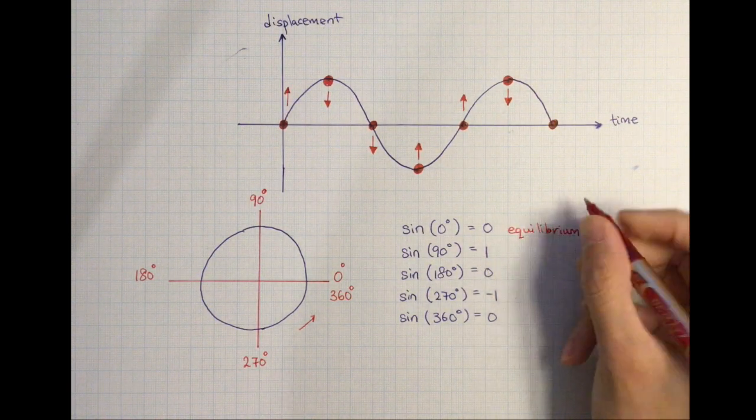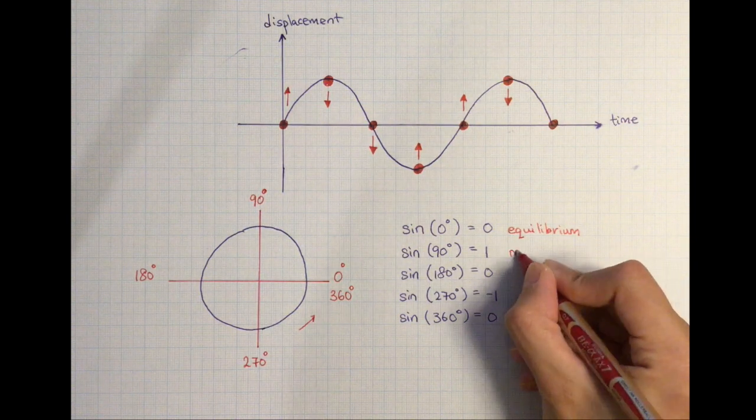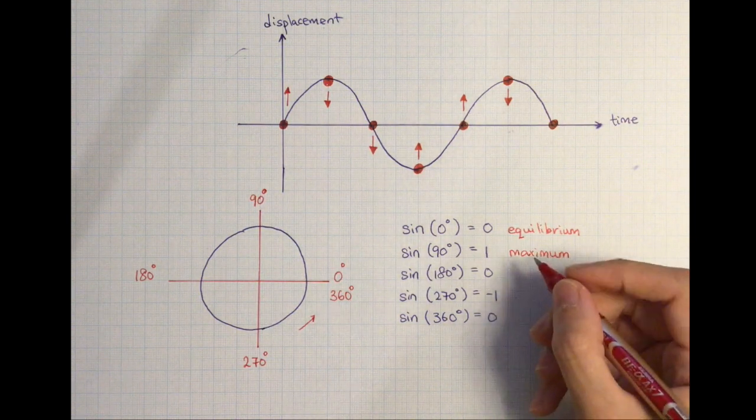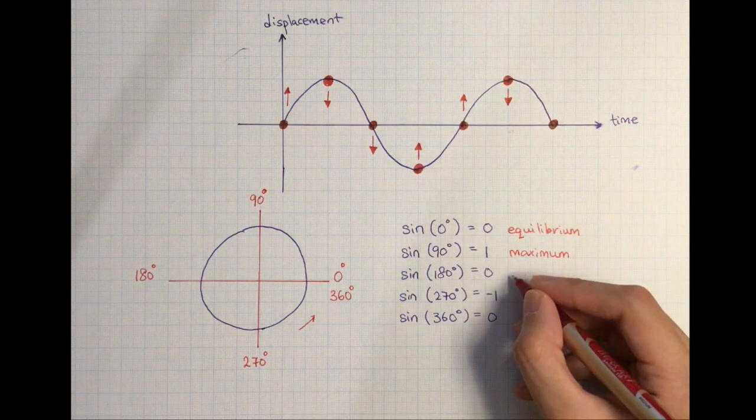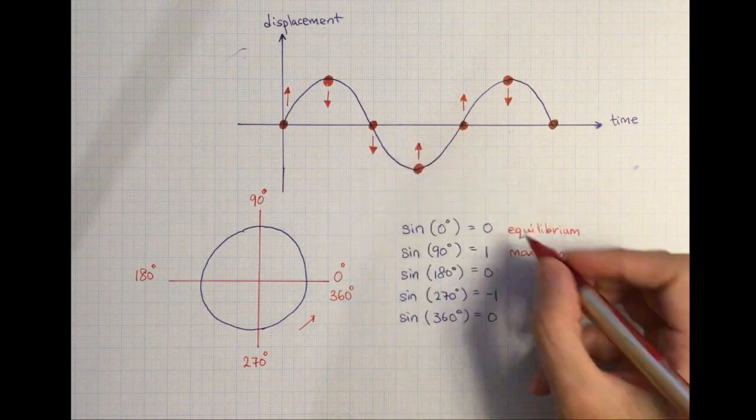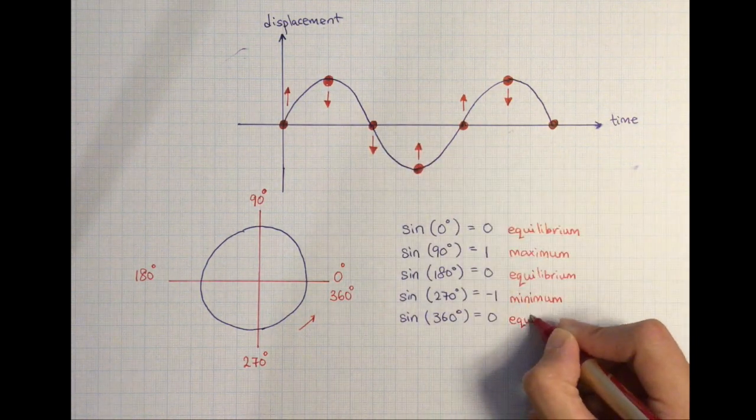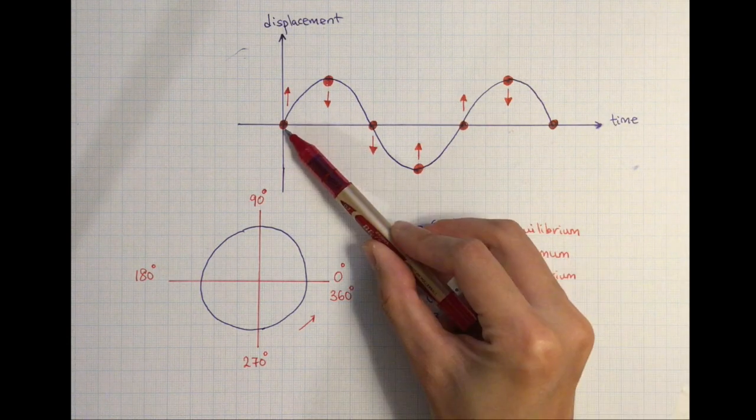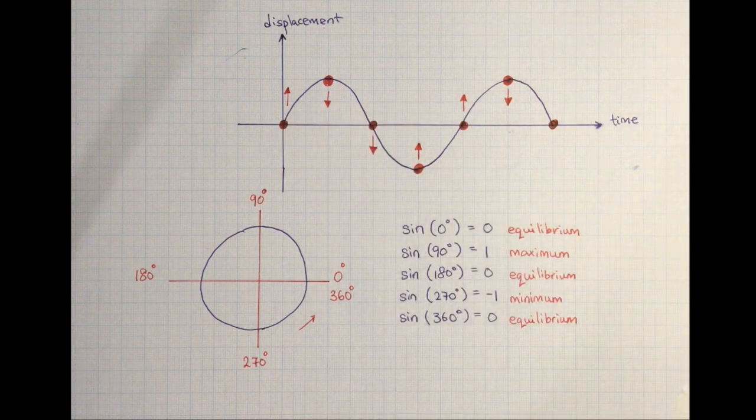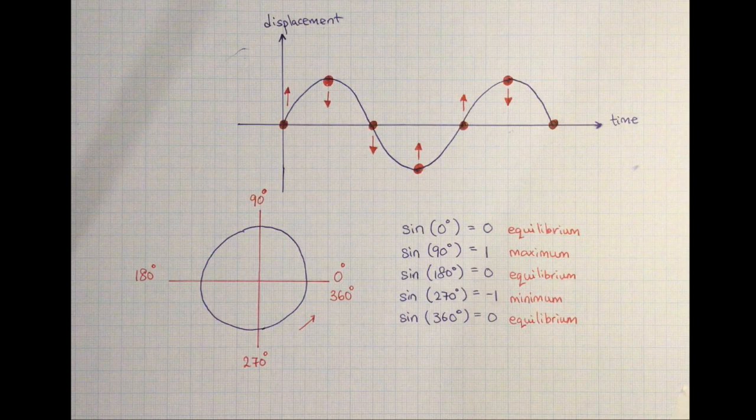Zero is where the equilibrium is. When sine 90 is 1, that represents the amplitude or maximum displacement. When it's negative 1, that is minimum displacement or the trough of the wave. So instead of putting time in the horizontal axis, we can have what's known as the phase of a wave.